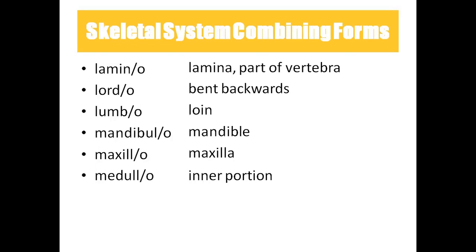In laminectomy, they remove a part of the vertebra called the lamina to relieve pressure on the spinal cord. 'Lordro' means increased backward bend — the posture of a pregnant woman is called lordosis. 'Lumbo' means loin or lower back. 'Mandiblo' means lower jaw. 'Maxillo' means upper jaw.